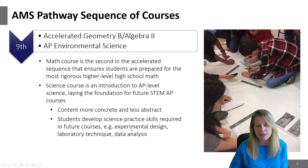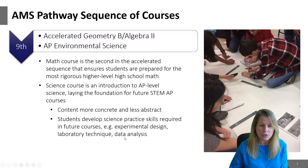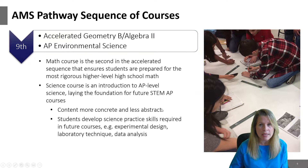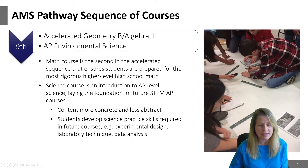We do things like experimental design, we focus on laboratory technique, and we also focus on data analysis — all skills that will be used throughout your four years in AMS. The good thing about starting off with environmental science as your first AP course is that the content is a little bit more concrete. We've all been outside and experienced the environment, so students tend to have some experience with the content. It makes it a little bit easier to understand, and the environmental science content is also less abstract.